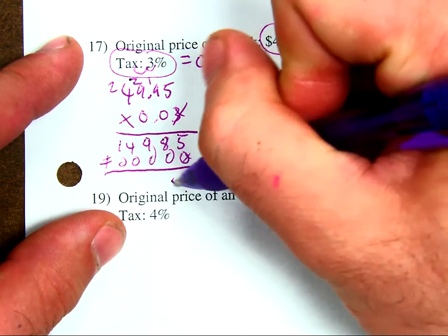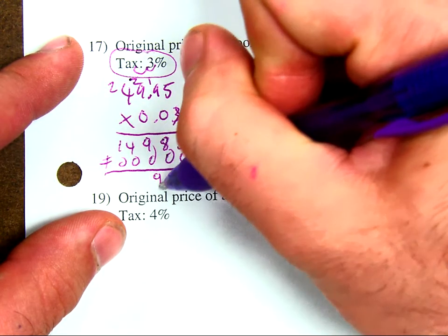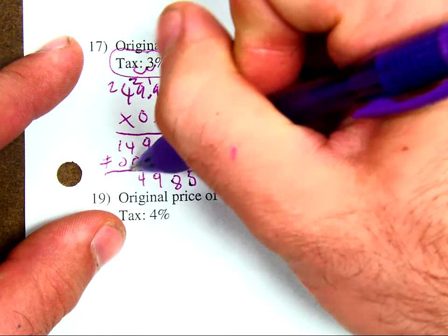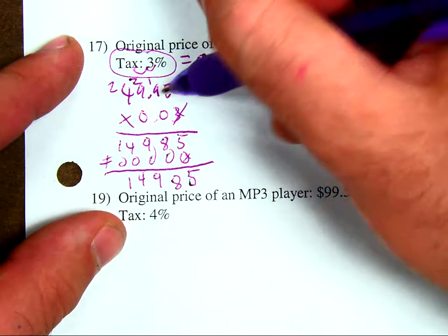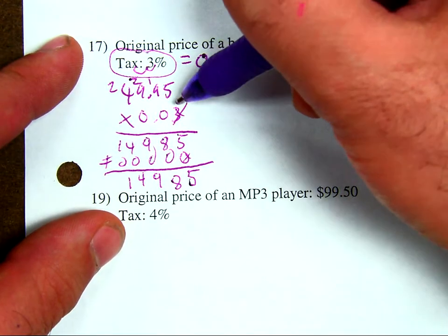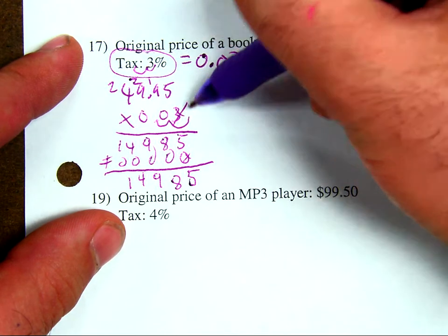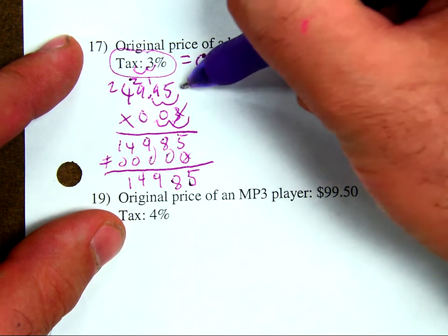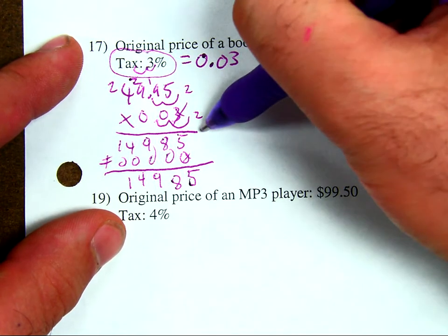5. 8 plus 0 is 8. 9 plus 0 is 9. 4 plus 0 is 4. 1 plus 0 is 1. Now, how many decimal places do I have throughout this whole thing? I have 1, 2, 3, 4. So, I have 4 decimal places.